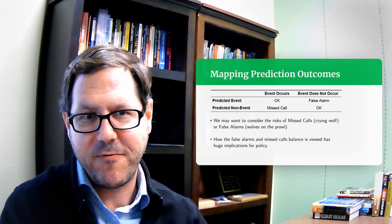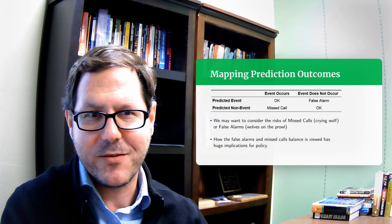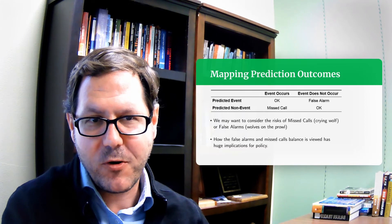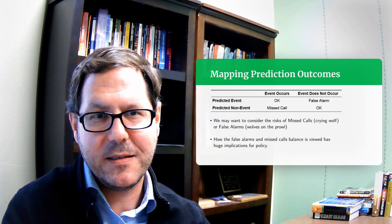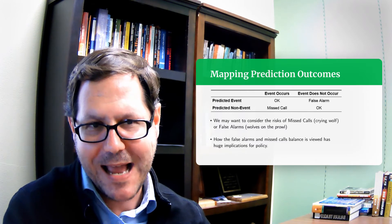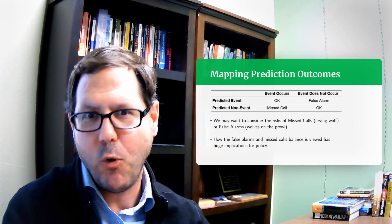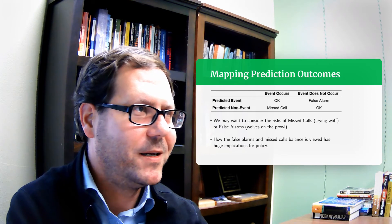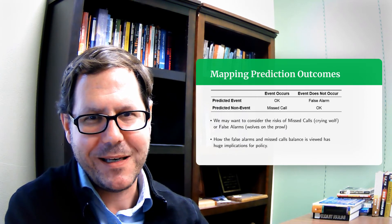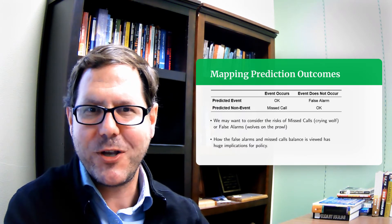But what happens if I'm wrong? If I predict an event and that event doesn't occur, that sets off a false alarm, what Tetlock describes as crying wolf. Versus if I make a prediction that a new pandemic is not going to happen and then it happens and I missed that, missing a wolf on the prowl to kind of continue with our analogy of the boy who cried wolf.